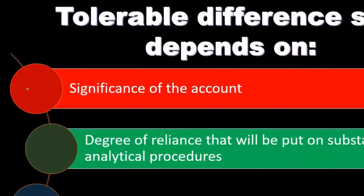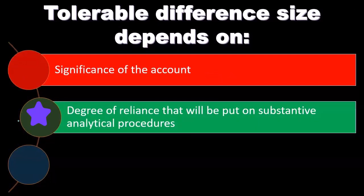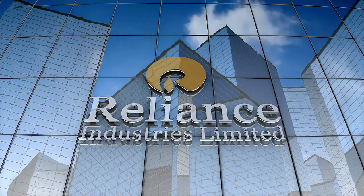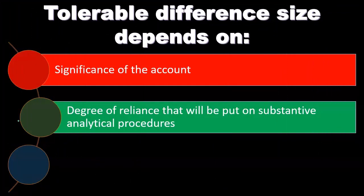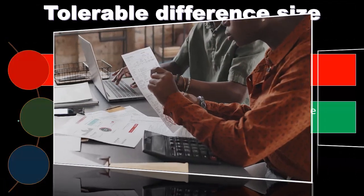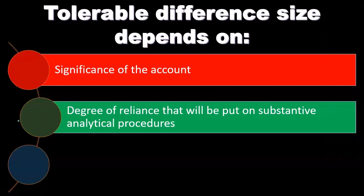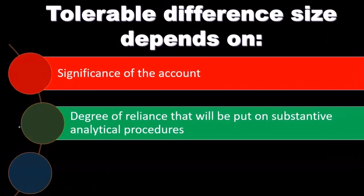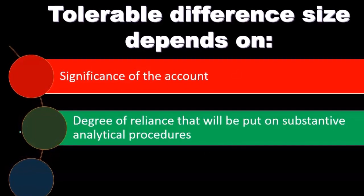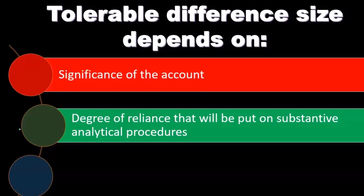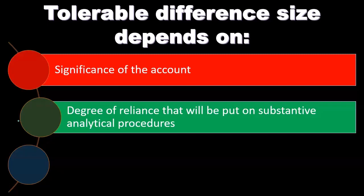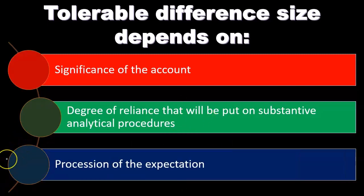Degree of reliance that we'll put on substantive analytical procedures. Analytical procedures is one of the things we do in the audit. The question is, how reliant are we on the analytical procedures? If there are going to be other procedures that cover this information, then the tolerable difference could be larger and we can do more testing elsewhere. However, if we're relying more heavily on the analytical procedure itself, then we're going to want a lower level of tolerable difference to be more reliant on that information.